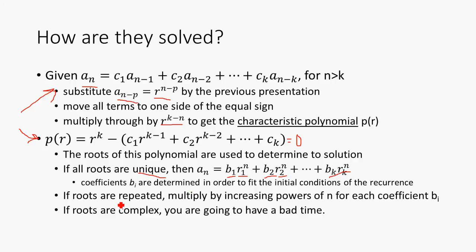So if the roots are repeated, then you have to multiply by increasing powers of n for each coefficient b_i. You'll see what that means in a second. And if the roots are complex, then you're going to have a bad time.